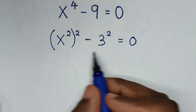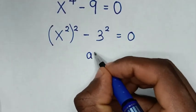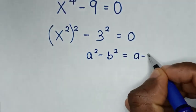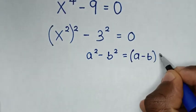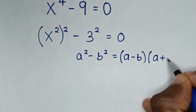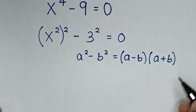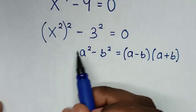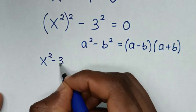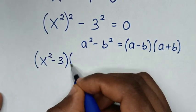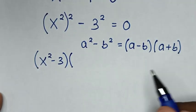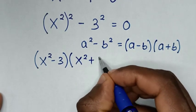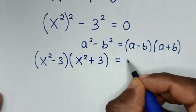This is in the form of a perfect square, so we'll apply the rule a squared minus b squared is equal to a minus b bracket times a plus b bracket. Then from the rule, a minus b gives us x squared minus 3, and a plus b gives us x squared plus 3, is equal to 0.